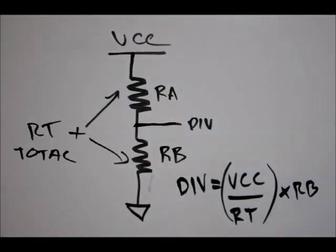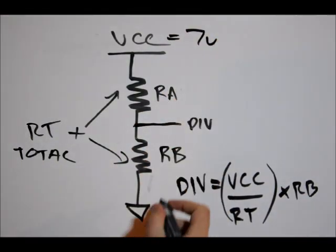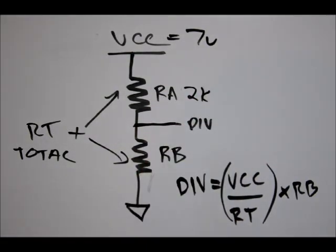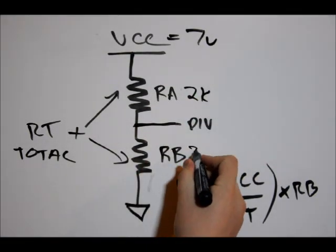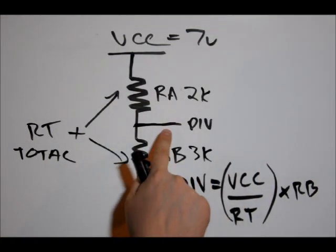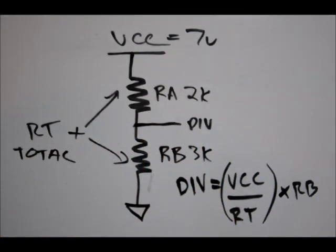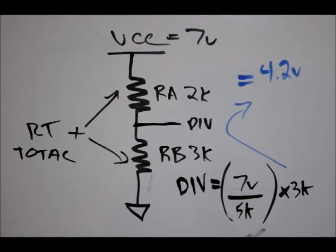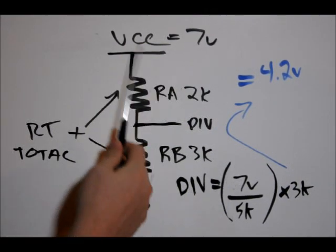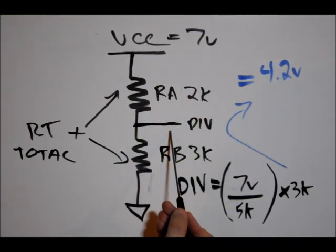Now this is useful because we're actually going to use this with our comparator circuit. So let's plug in some values. VCC equals 7 volts. RA equals 2,000 ohms, 2K. RB is 3,000 ohms, 3K. So use these three values to determine what your voltage divider value is, right in the middle of there. Your R total, 5K. Your RB, 3K. And your VCC is 7 volts. If you did this formula, you should end up with 4.2 volts. So that's what we'll see here.